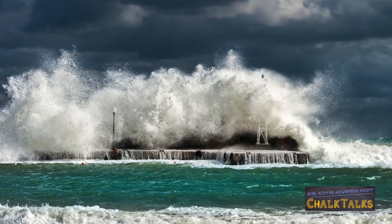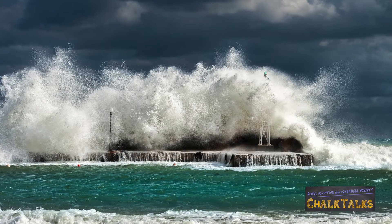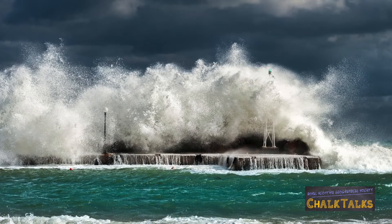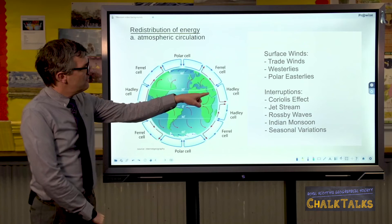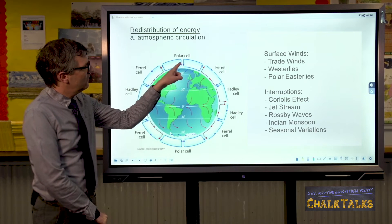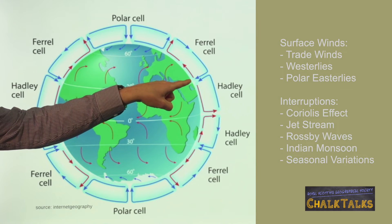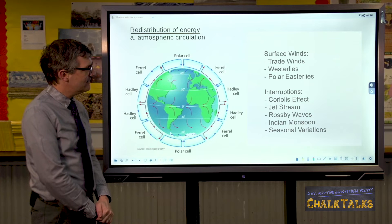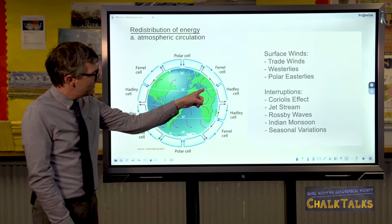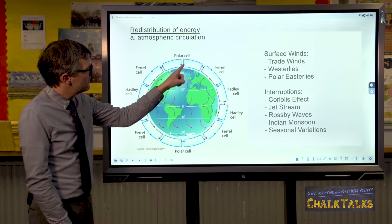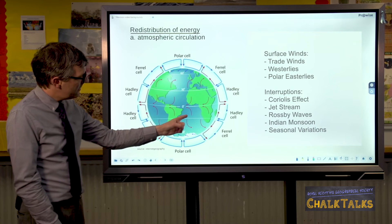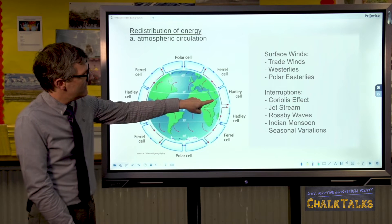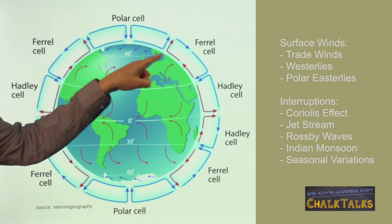Surface winds are important in all of this. In general, the global wind system is created by air blowing from areas of high pressure to areas of low pressure. But it isn't quite so simple. The surface winds are the bottom parts of the Hadley, Ferrell and the polar cell. They effectively move from high pressure to low pressure, but they're deflected by the Coriolis effect because of the spinning Earth. In the northern hemisphere they're deflected to the right, and in the southern hemisphere they're deflected to the left. And this creates the trade winds, the westerlies and the polar easterlies.